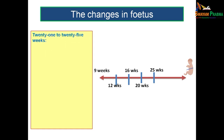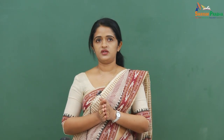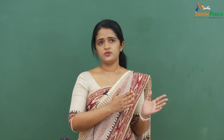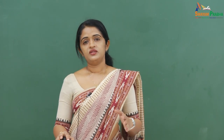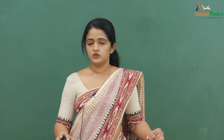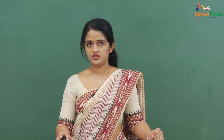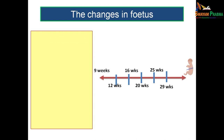From 21 to 25 weeks, the fetus undergoes rapid weight gain and the skin is pink to red in colour. There are rapid eye movements, especially around the 21st week. By approximately 24 weeks of intrauterine period, type 2 pneumocytes begin secreting surfactants.